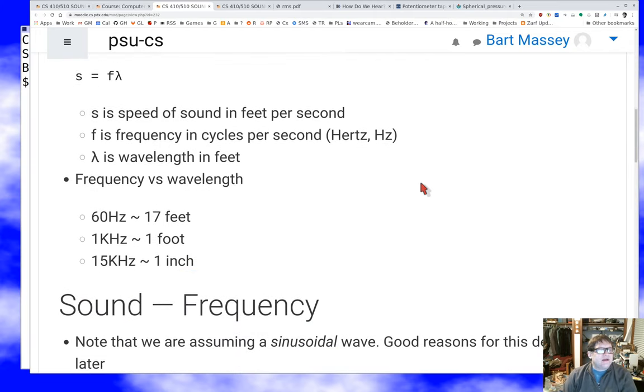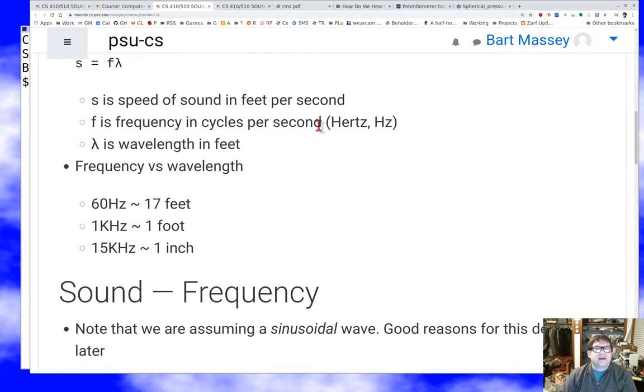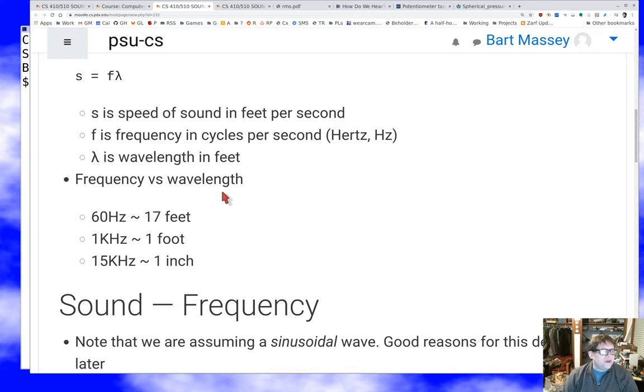We measure frequency in cycles per second, we measure the speed of sound in feet per second, we measure the wavelength in feet. For a 60 hertz sound, we end up with like 17 feet between the peaks. At one kilohertz, a thousand cycles per second, we have a wave that's about one foot long. At 15 kilohertz, we get a wave that's about an inch long. 60 hertz is a very low tone, near the bottom of the range of tones you can actually hear. It's a bass note. And 15 kilohertz is sort of the upper limit of human hearing for most of you when you're younger. Anything higher than that is usually regarded as ultrasound or near ultrasound.